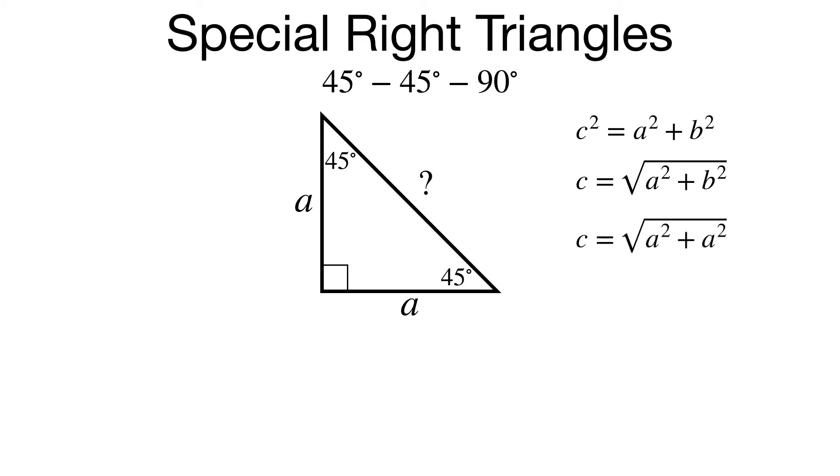But in this case, a and b are equal. So I can replace b with a, and if I add these two a squareds, I get c equals the square root of 2a squared. a squared is a perfect square, so I can take that outside of the radical. Square root of 2, nothing I can do with it. So our hypotenuse is a times the square root of 2.